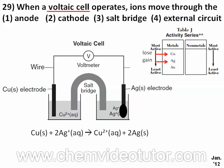Simultaneously, the Cu electrode decomposes, shedding Cu²⁺ ions into the solution. While the electrons travel through the wire, positive and negative ions travel through the salt bridge to keep the flow of electricity continuous between containers, making the answer choice three.